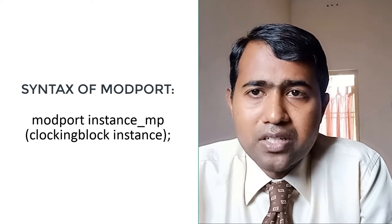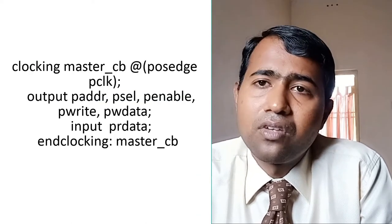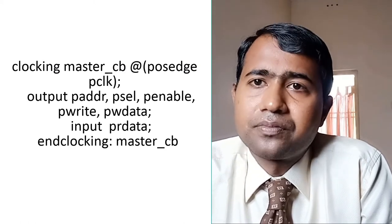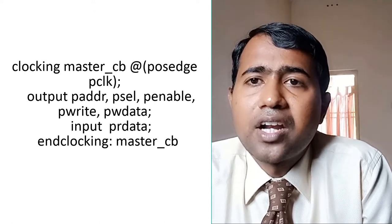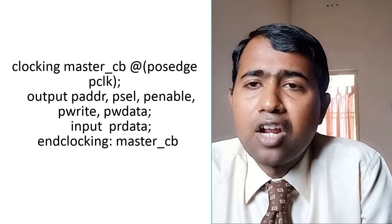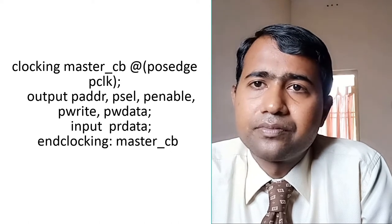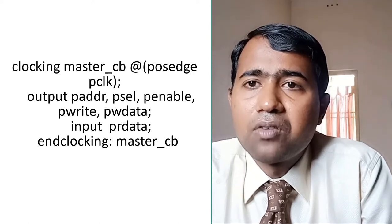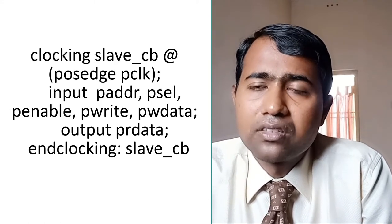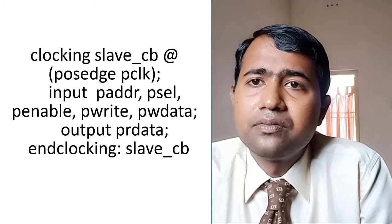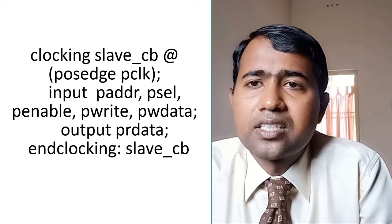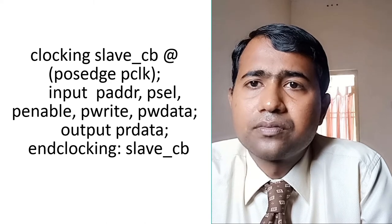Here I have named the arbiter as 'passive'. Let us declare the clocking blocks first. The clocking block for master: 'clocking master_cb @(posedge pclk); input and output signals declared; endclocking'. Next, the clocking block for slave: 'clocking slave_cb @(posedge clock); input and output signals declared; endclocking'. Next, we will declare the clocking block for the arbiter.